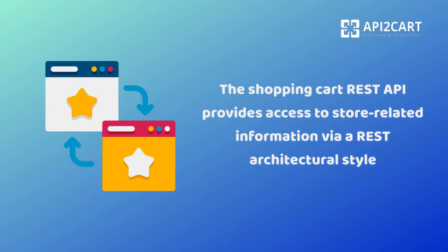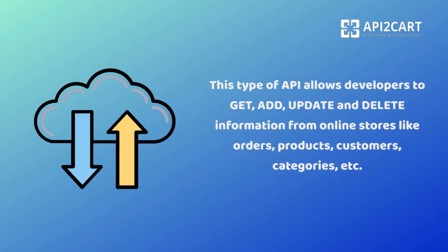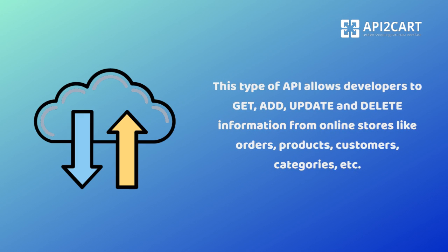The Shopping Cart REST API provides access to store-related information via a REST architectural style. This type of API allows developers to get, add, update, and delete information from online stores — including orders, products, customers, categories, and more.